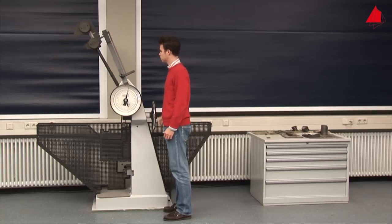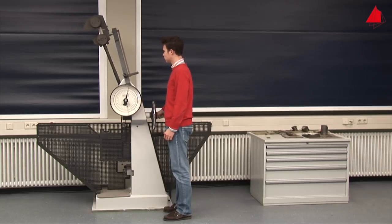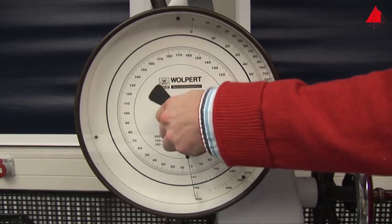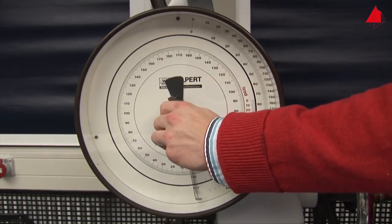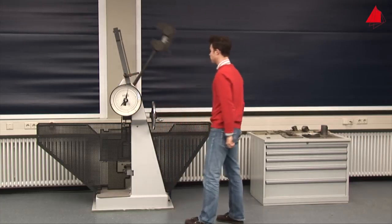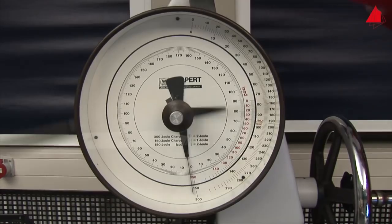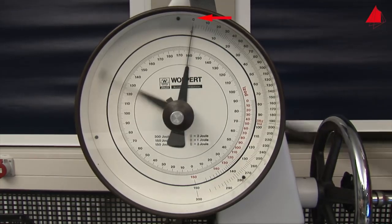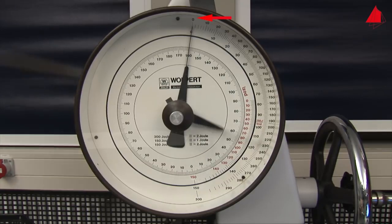Then the tester checks whether the testing machine has been adjusted accurately. In order to do this he turns the drag indicator downwards and releases the pendulum without a test specimen. The drag indicator stops at position zero. This proves that the pendulum has the correct starting position and that the friction is correctly compensated.